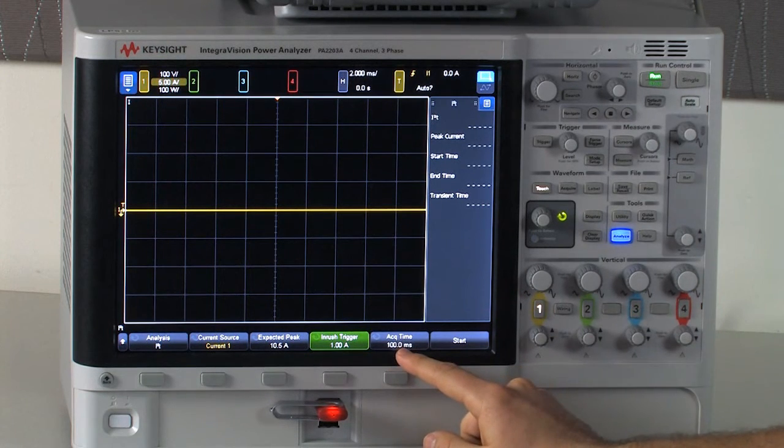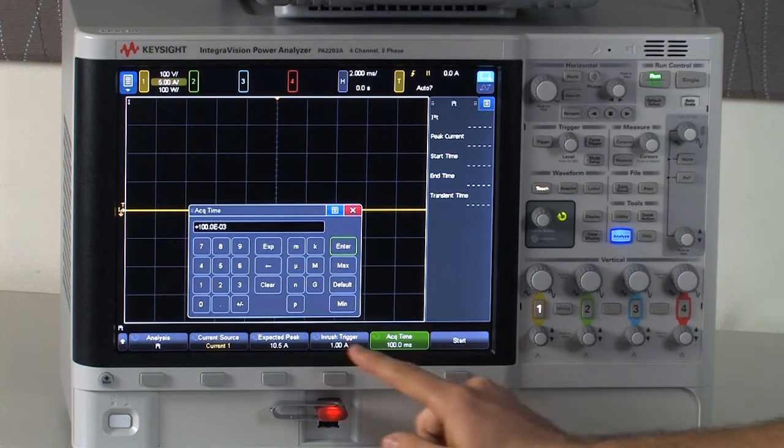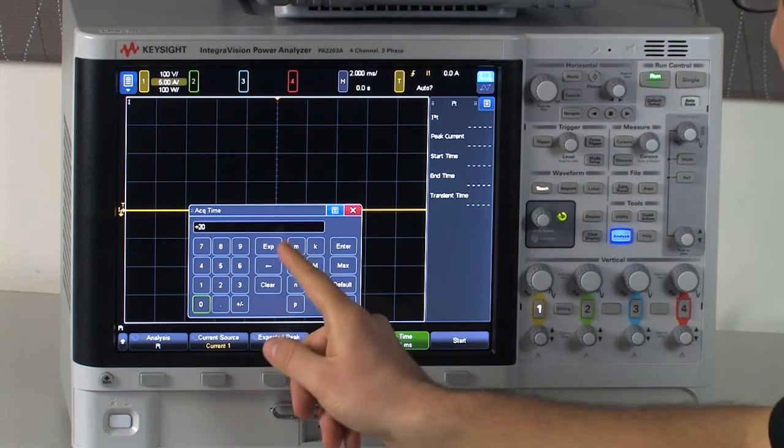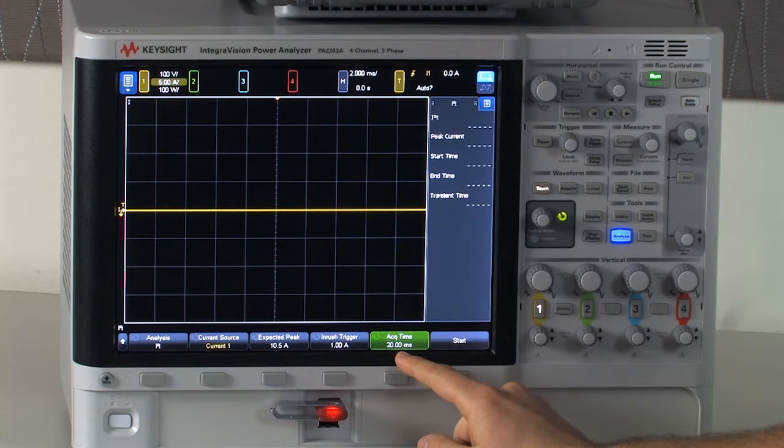The acquisition time will be the test time across the full screen. I have a 16 millisecond pulse, so I'll set that to 20 milliseconds to ensure that I catch the whole inrush.